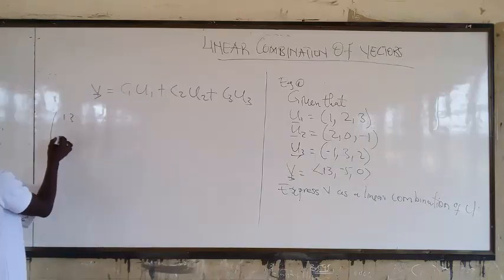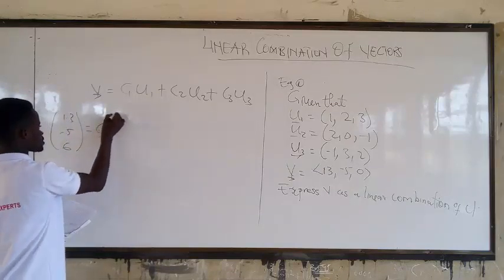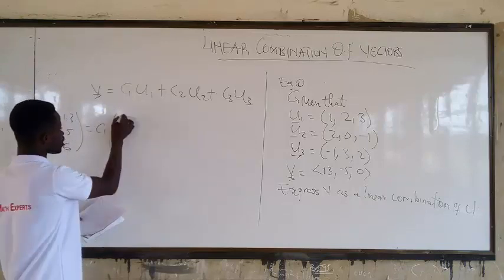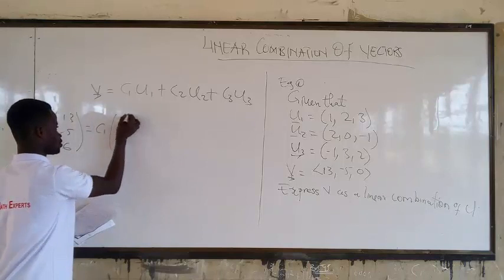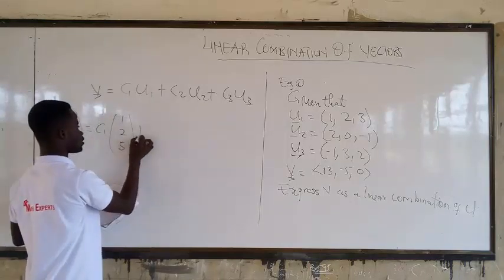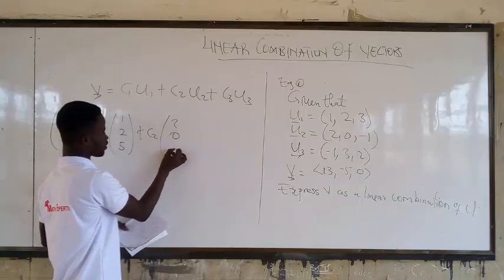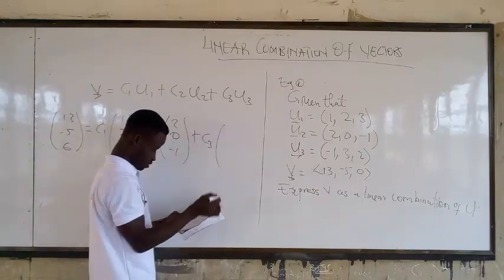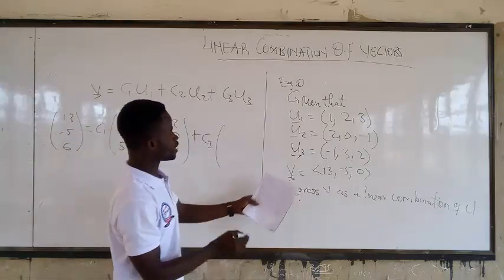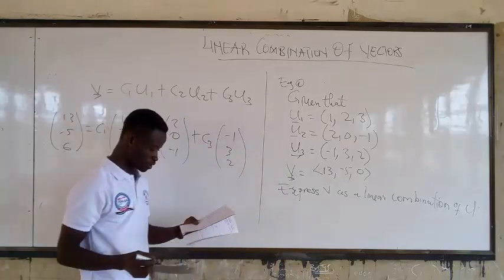So that means that you are going to get, you can write it in a column form or whatever you like. 13, negative 5, 6, is equal to C1 times 1, 2, 5, plus C2 times 2, 0, negative 1, plus C3. You also have U3 to be negative 1, 3, 2.